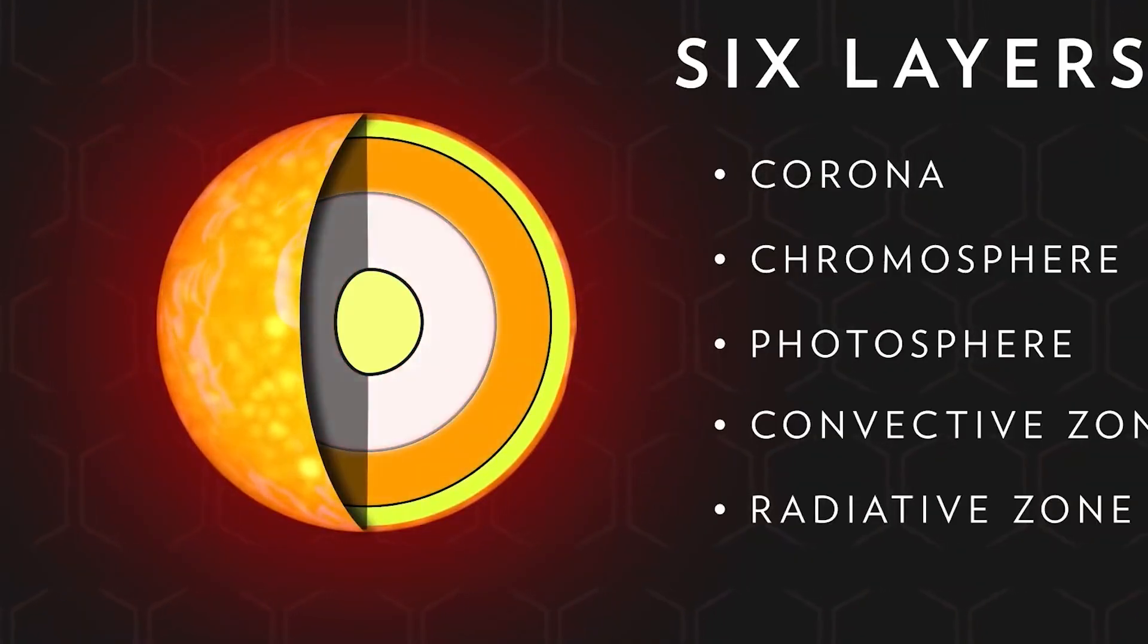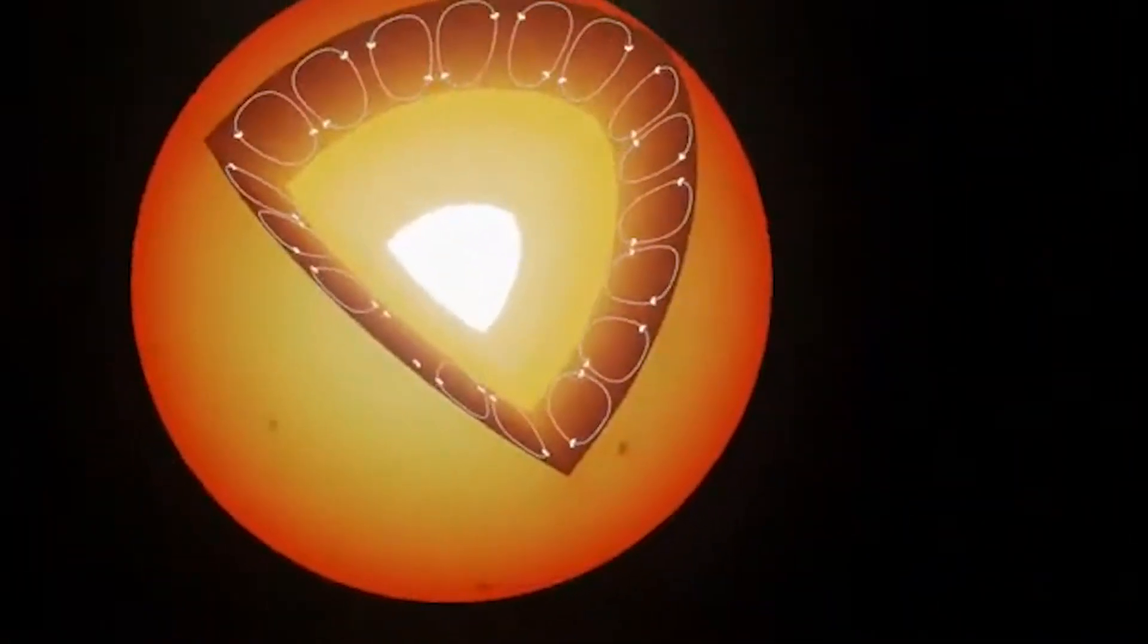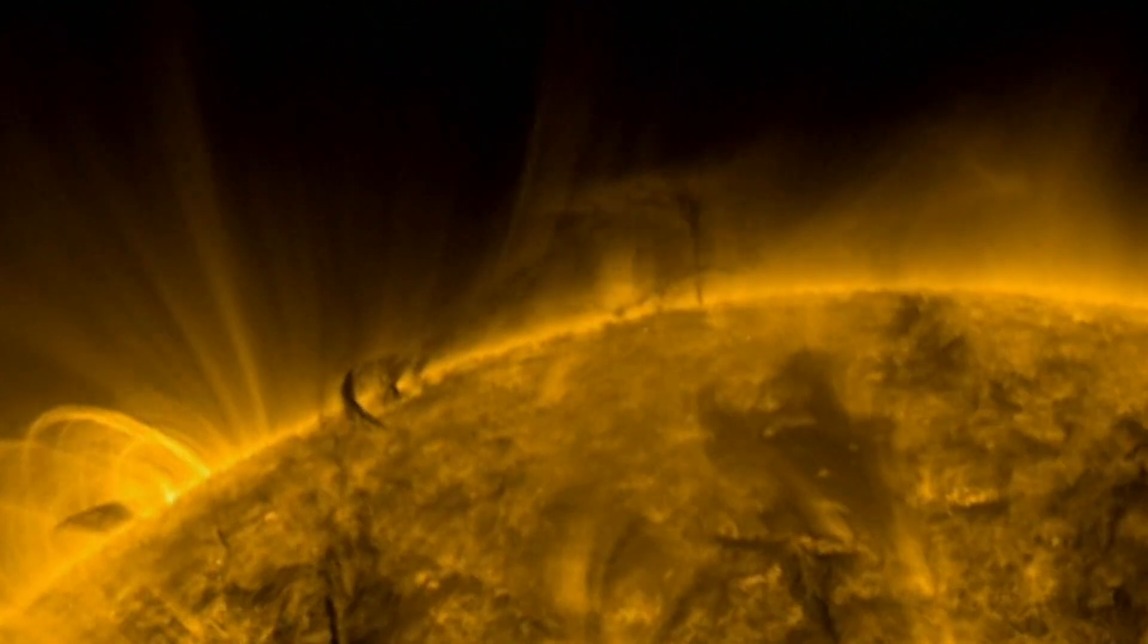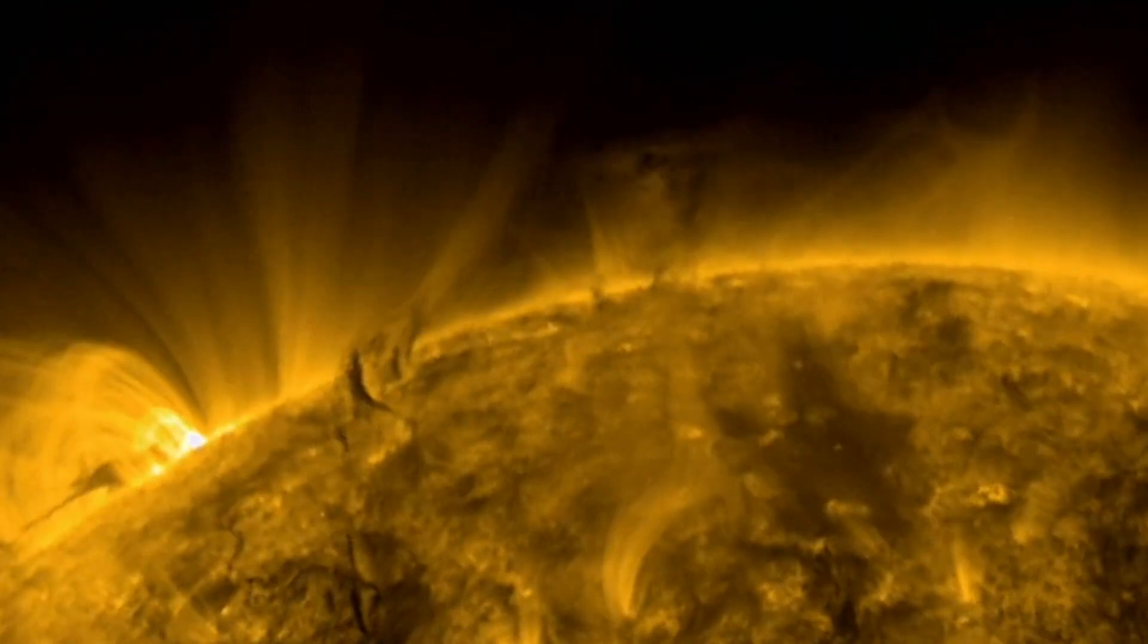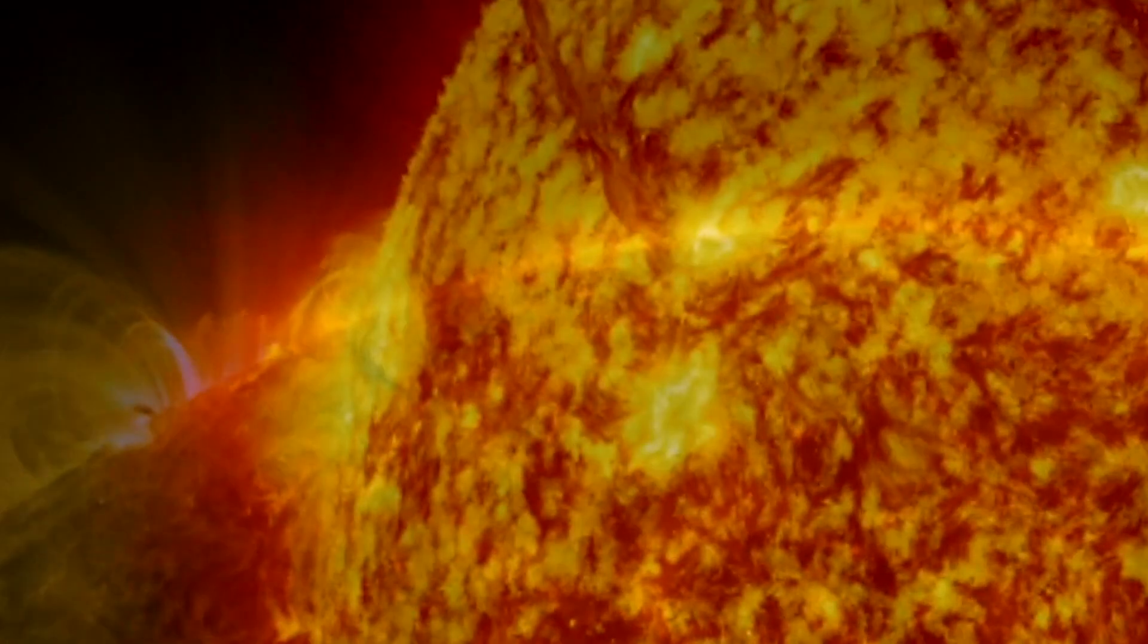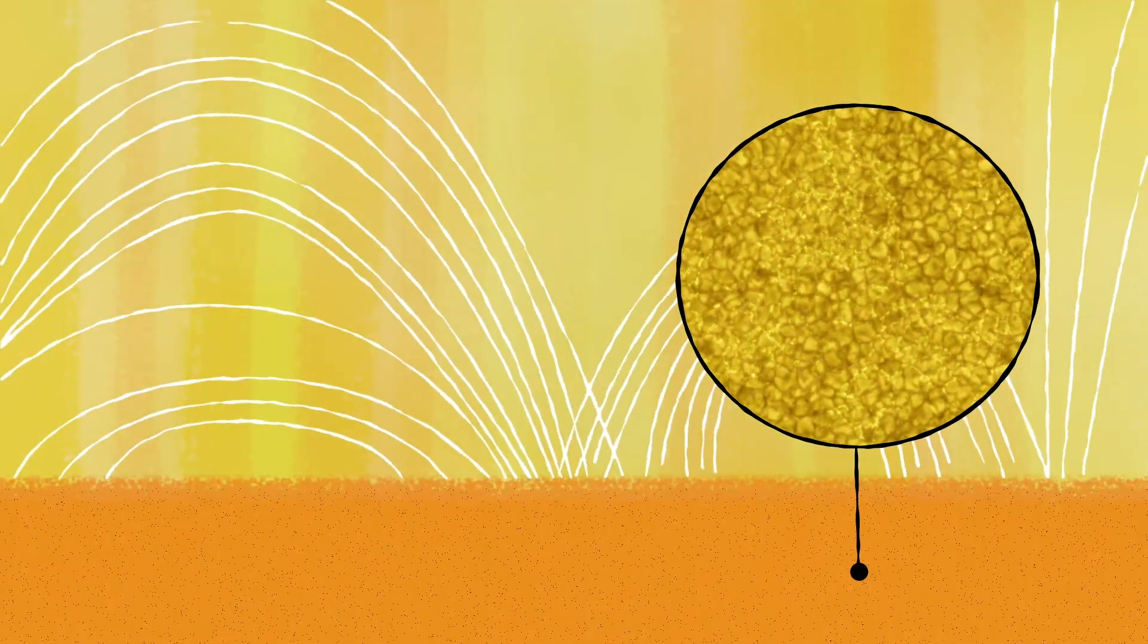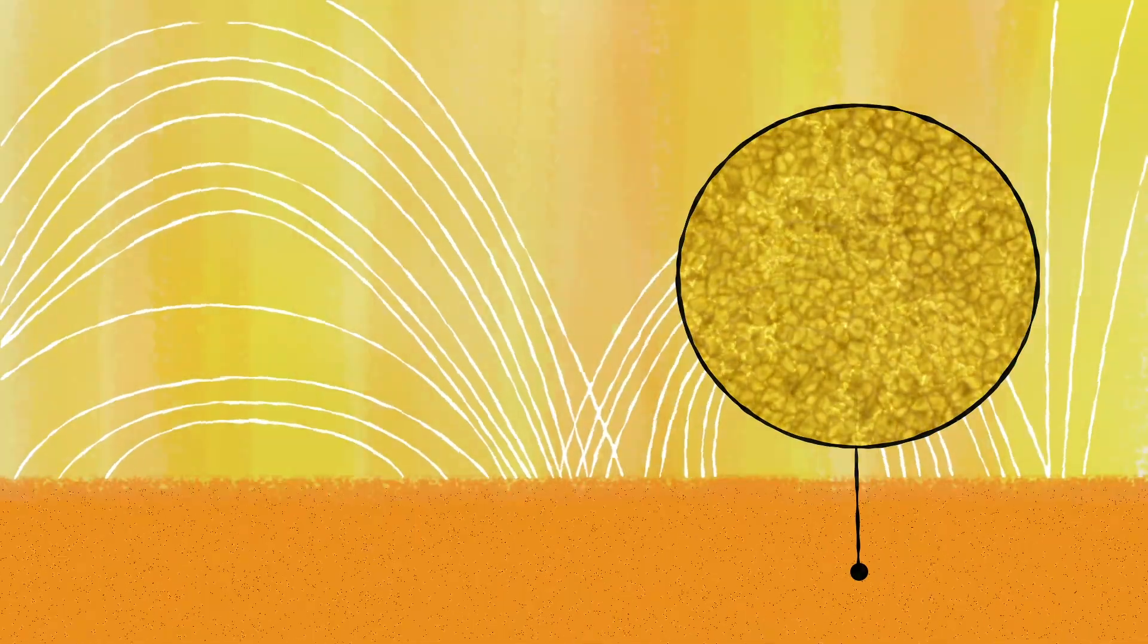The next layer is the radiative zone, where energy in the form of photons and light units escapes from the superhot core. Although this layer is not as dense as the core, it is still dense enough for photons to bounce off and collide repeatedly with neighboring gas molecules. According to NASA, a single photon takes about 100,000 years to travel from the sun's core to its outer layer.